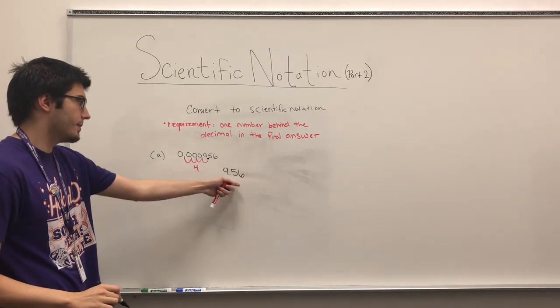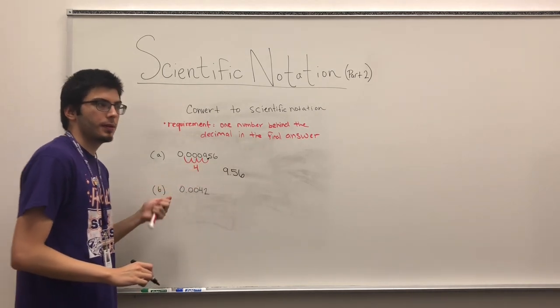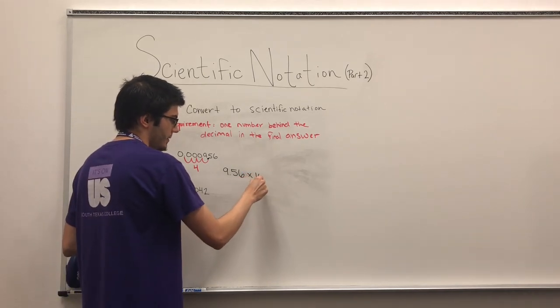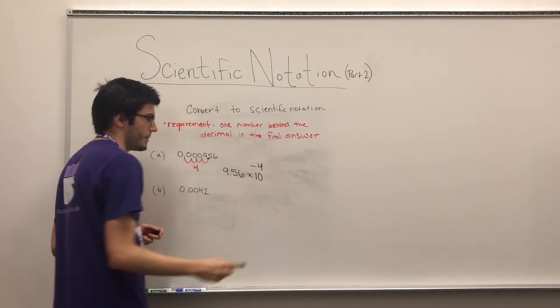And so I need to turn this number to the original. So I have to make it smaller. So it's times ten to the minus four.